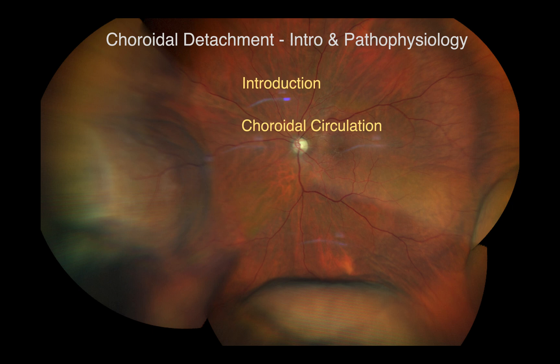There are two forms of choroidal detachment: serous and hemorrhagic. Serous choroidal detachment occurs when there is leakage of serum from the choroidal blood vessels into the suprachoroidal space. Hemorrhagic choroidal detachment occurs when there is abnormal blood accumulation in the suprachoroidal space secondary to rupture of a ciliary body vessel.